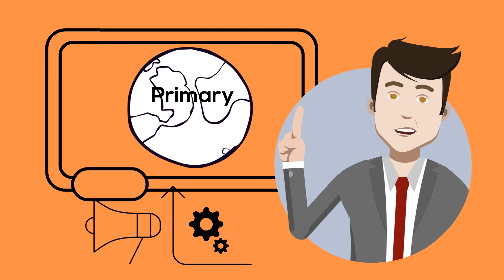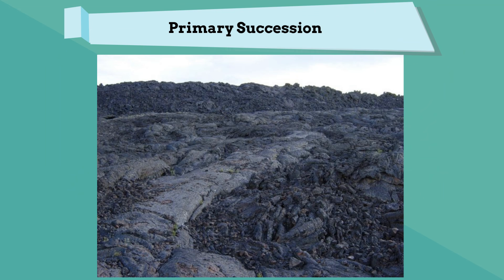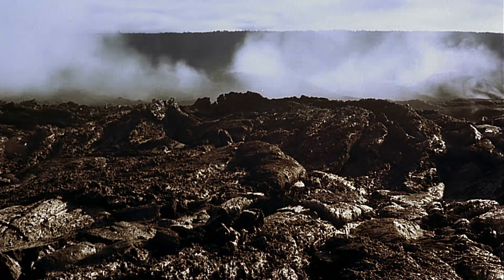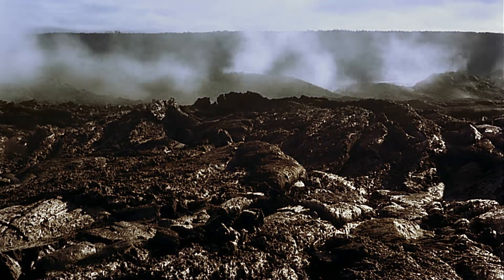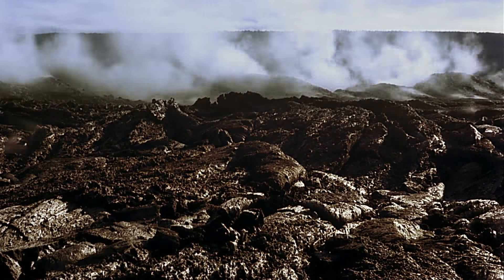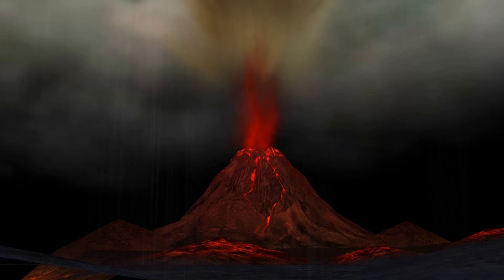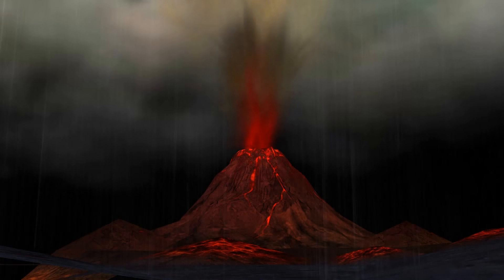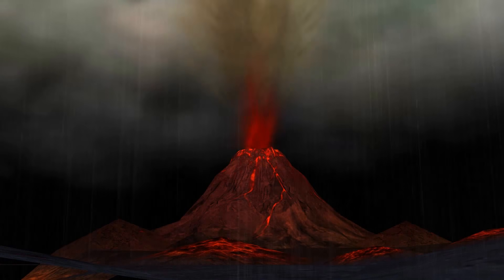Primary succession occurs in new areas that have little or no soil. In other words, the area has been almost completely destroyed or is newly formed. For example, new islands can be created from lava flows — the lava creates a new land without soil. A volcano may destroy a very large area. This would be an example of primary succession.